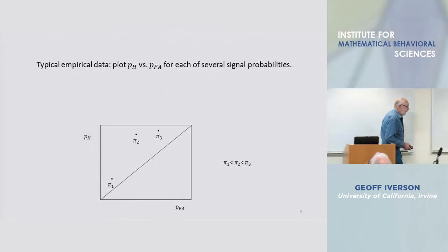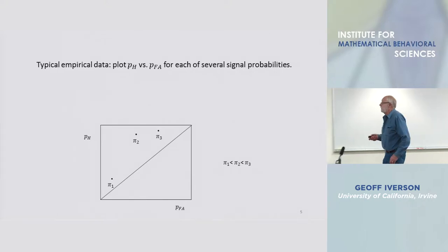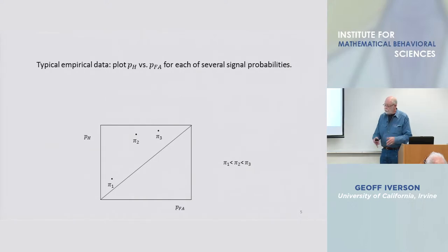So up here you get data, you get a hit rate and a false alarm rate under a condition in which the subject knows that the probability of a signal on any one trial is fairly large.